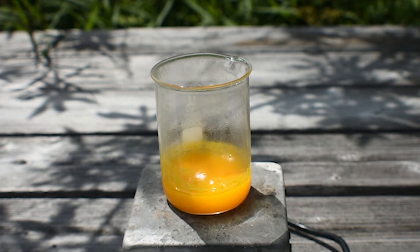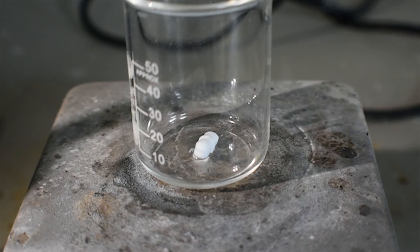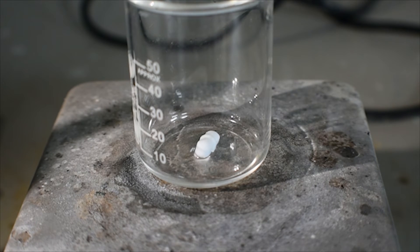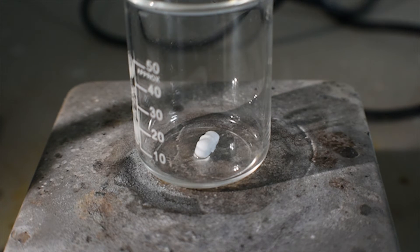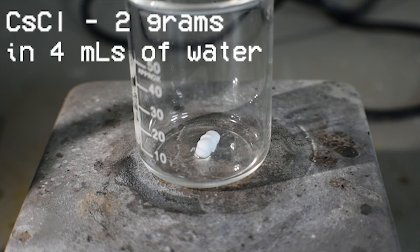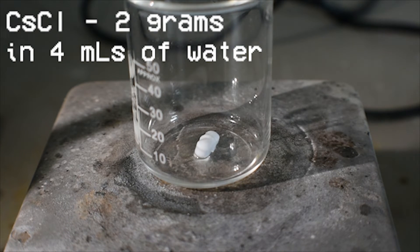So I'll come back when I'm ready to do that. So here in the beaker I have two grams of cesium chloride dissolved in the minimal amount of water, which is about four milliliters or so. It's actually really soluble, come to find out.